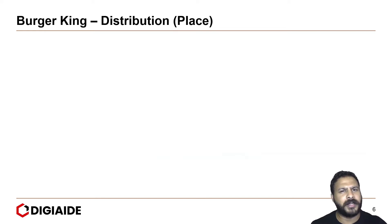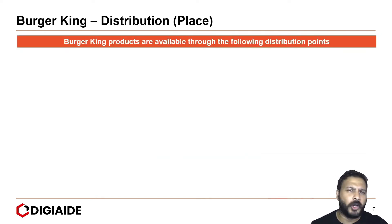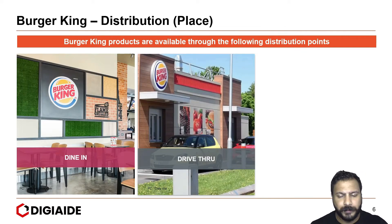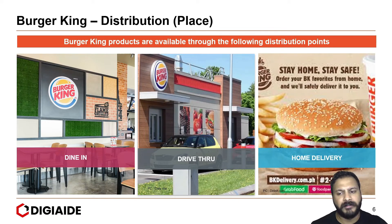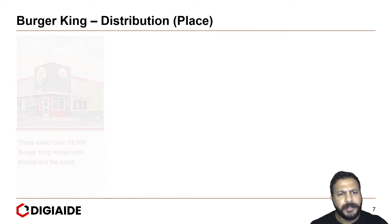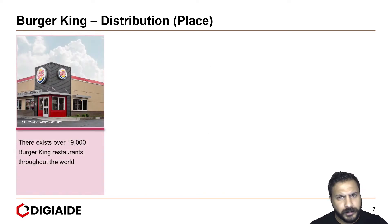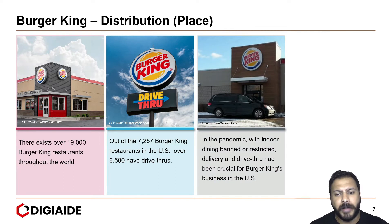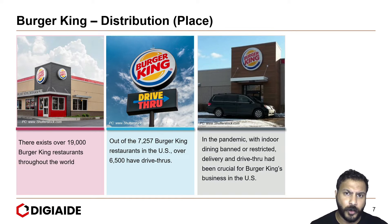Moving on to the next example of Burger King and understanding its distribution pattern. Burger King offers the following distribution points: first is the dine-in that we all go to, drive-thru, and finally home delivery via telephone or online ordering. Burger King has over 19,000 restaurants worldwide. Out of the 7,257 Burger King restaurants in the US, over 6,500 have drive-thrus. In the pandemic, with indoor dining banned or restricted, delivery and drive-thru had been crucial for Burger King's business in the US.